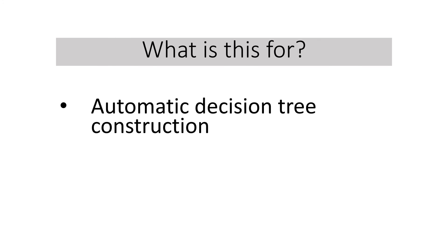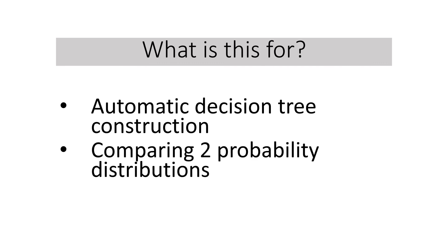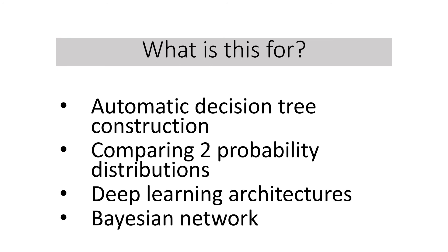Entropy is used for automatic decision tree construction. So we do feature selection in each step. Cross-entropy is used in comparing two probability distributions. It describes how similar these distributions are. In deep learning architectures like convolutional neural networks or CNN, the final output, softmax layer, most often utilizes cross-entropy loss function. In Bayesian networks, mutual information is used to learn relationship structure between random variables. And this defines the strength of the relationship.